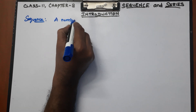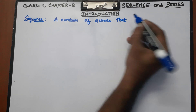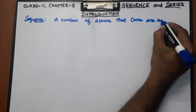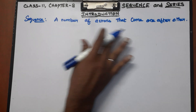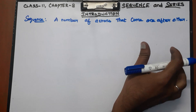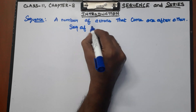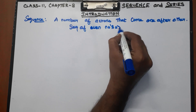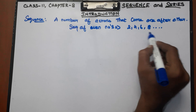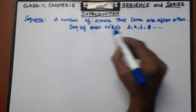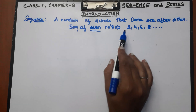A sequence is a number of terms that come one after another. For example, a sequence of even numbers: 2, 4, 6, 8. These are even numbers arranged one after another — that is called a sequence of even numbers.